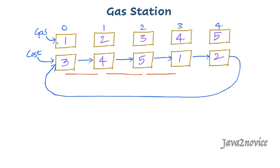Your inputs will be in array formats. Gas is one input array and cost is another input array. You can begin the journey with an empty tank at any gas station — you need not start from index 0. Return the starting gas station's index if you can travel around the circuit once in the clockwise direction. If you cannot complete the circuit, return minus 1.